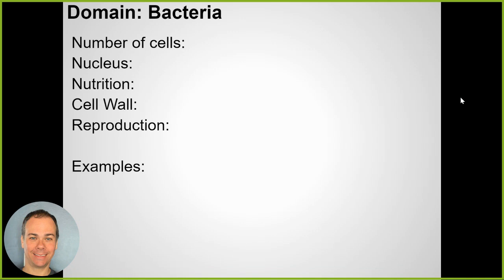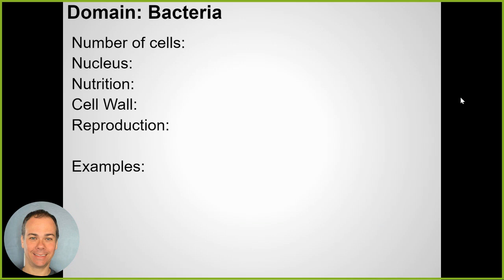If we think back to classification, when we look at how we group things, the biggest, broadest level are the domains. How many domains were there? All life is divided into how many domains? All living things go into one of three big, huge groups called domains.